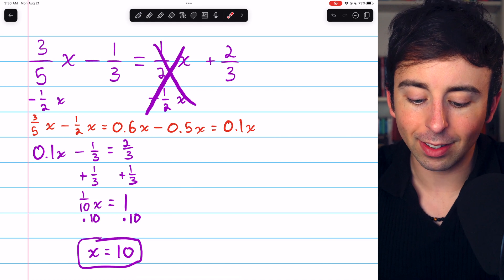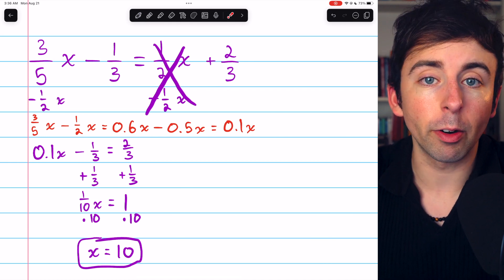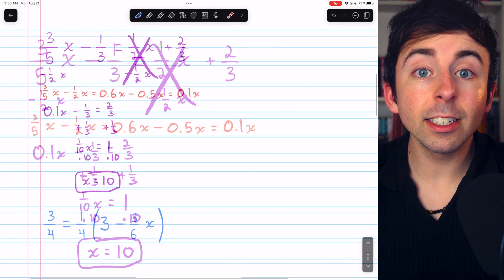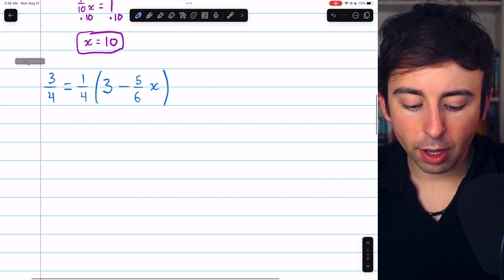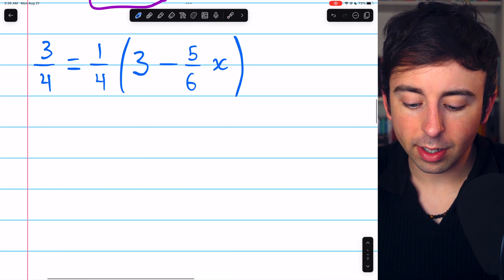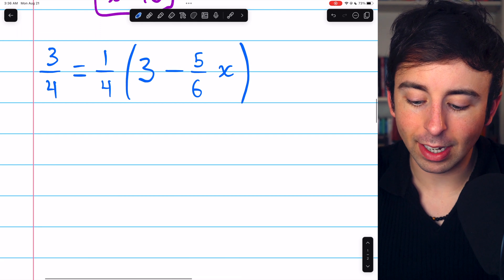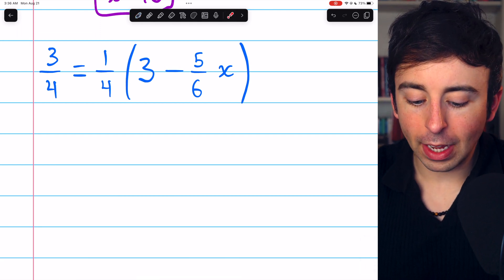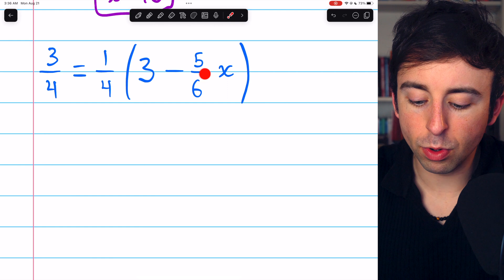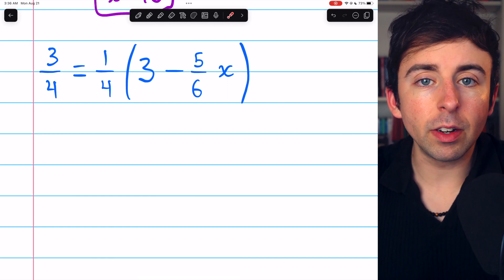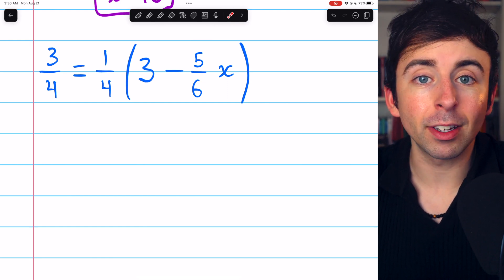And we could plug it back in for x in the original equation to verify that the solution is correct. Let's move on to the second problem. 3/4 equals 1/4 times the quantity 3 minus 5/6x. One thing we could do here is distribute the 1/4 through the parentheses and then proceed very much like we did in the previous problem.